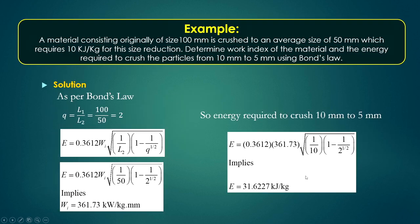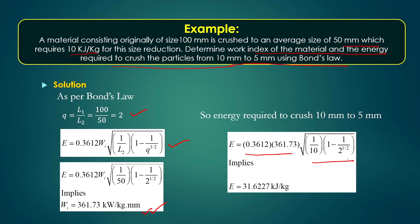Another example: a material originally of size 100 mm is crushed to an average size of 50 mm, requiring 10 kJ/kg. Determine the work index and the energy required to crush from 10 mm to 5 mm. Applying Bond's law for the first condition (reduction ratio = 2), substituting into the equation gives work index Wi = 361.73 kJ/kg. For the second condition (10 mm to 5 mm, also reduction ratio = 2), after substitution the energy required is E = 31.6227 kJ/kg.